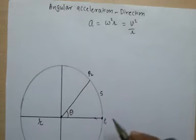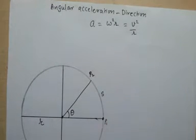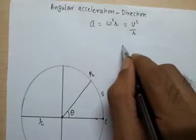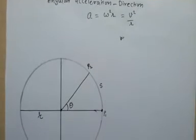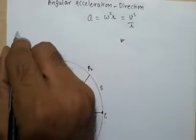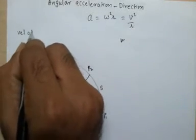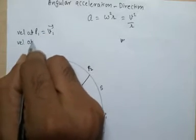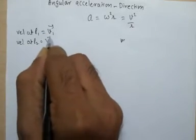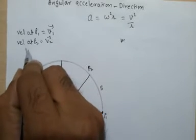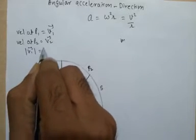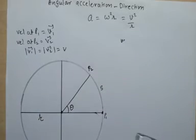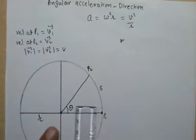We need to get the velocities of the object at locations p1 and p2. The velocity at p1 is equal to v1, and the velocity at p2 is equal to v2. Of course, the magnitudes are the same because the body is performing uniform circular motion — let's say both equal v.